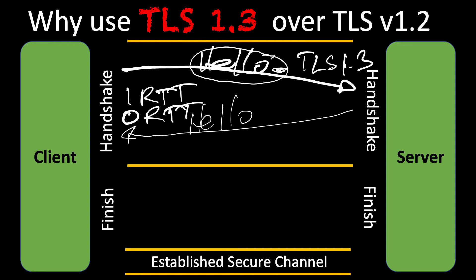Also in version 1.2, as part of that hello, we're offering a list of ciphers we can support. In version 1.3, we're using Diffie-Hellman, and all those weak ciphers have actually been removed — it's much more secure from that perspective. So we covered the removal of ciphers, and there is no version negotiation. Another key element is that version 1.3 supports what we call AEAD ciphers — these are much more secure ciphers that are approved for use with TLS 1.3.